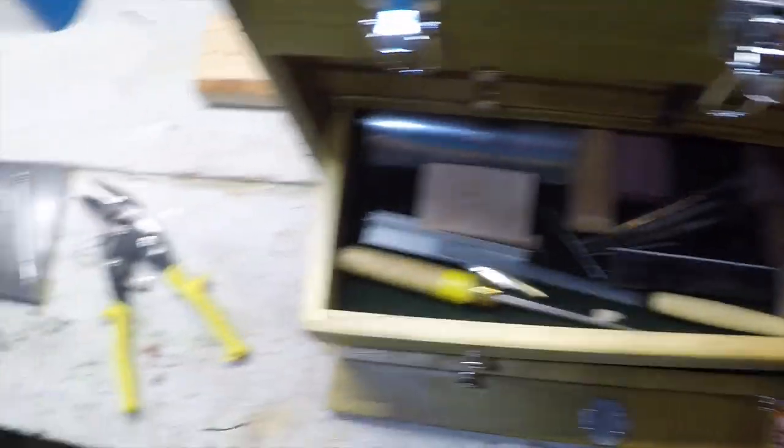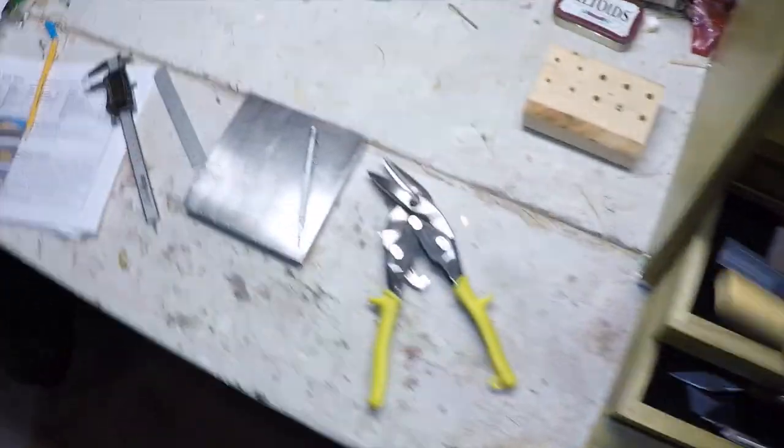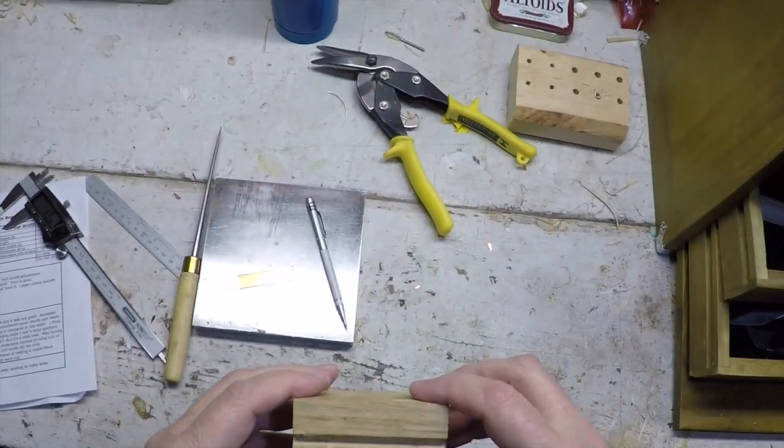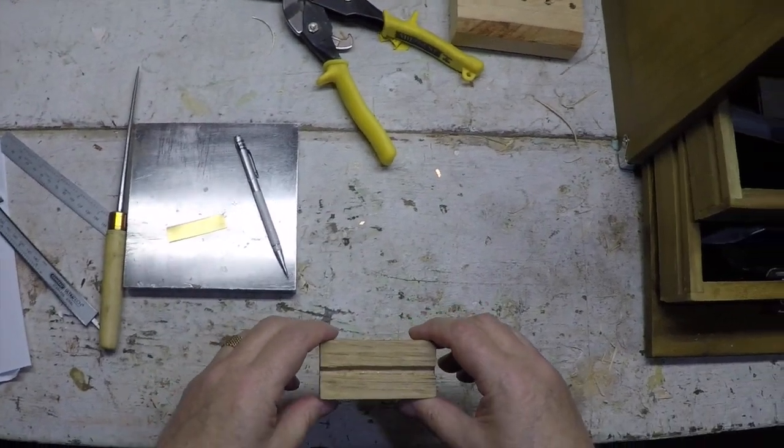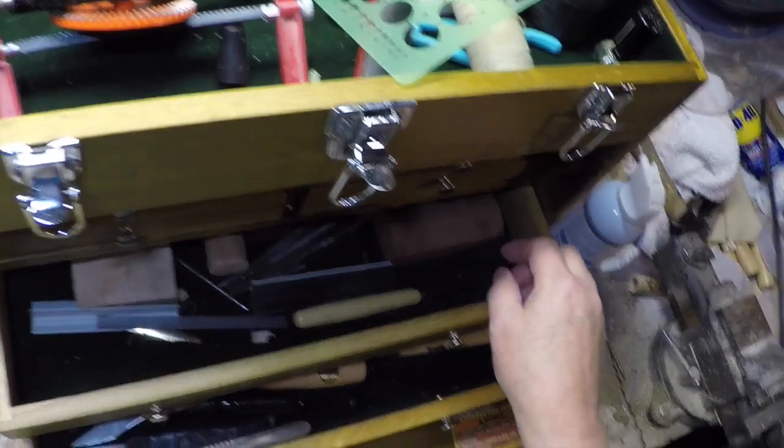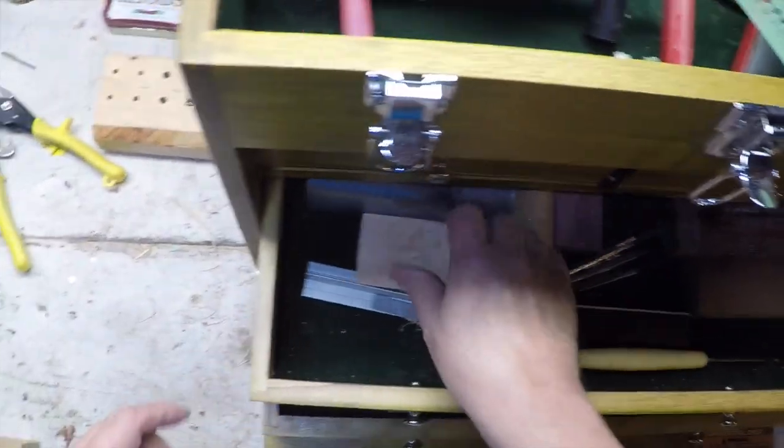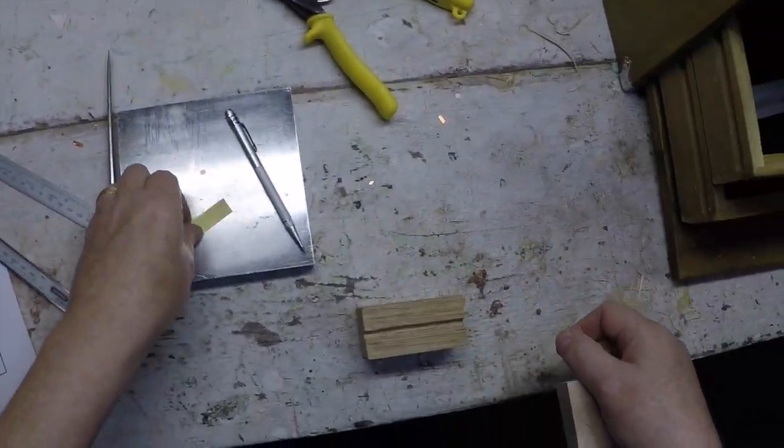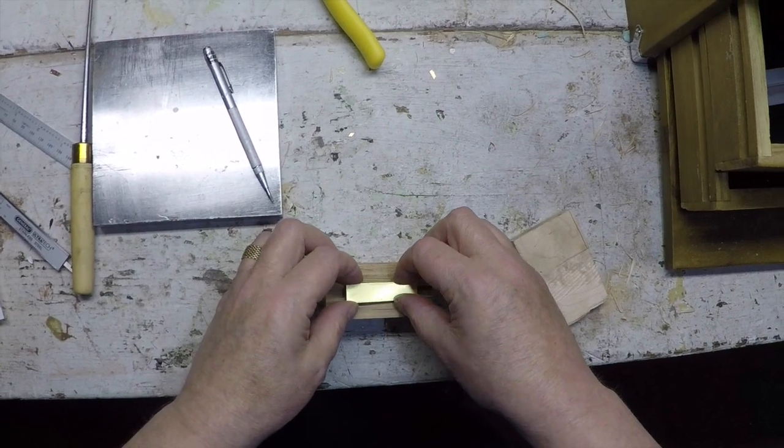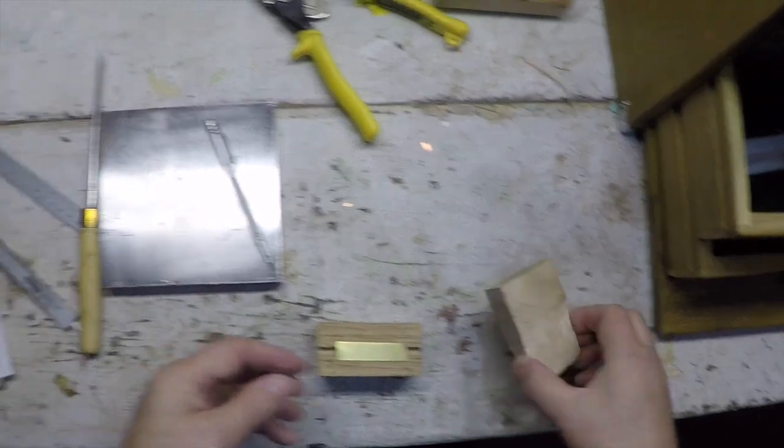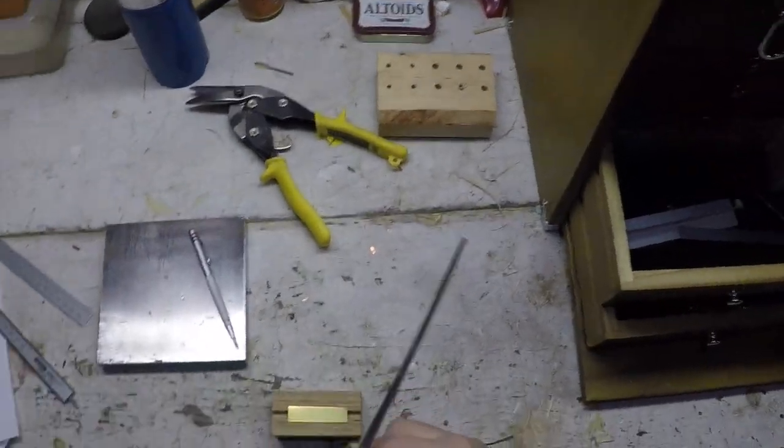Next we grab the Brad Angus mandrel. I'm going to have to make another one of these, but this is what I pound the mandrel with the brass through. And I made this thing to hold onto the mandrel.